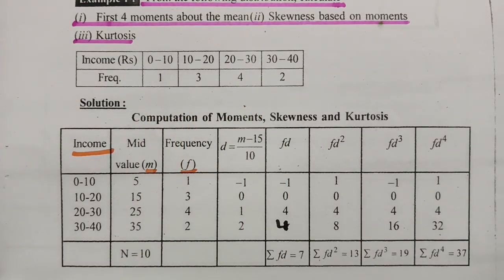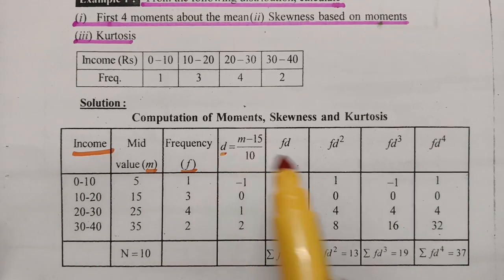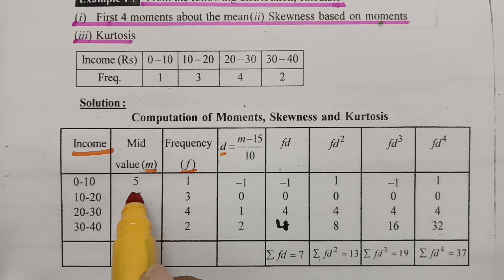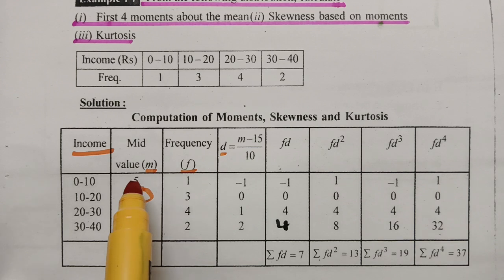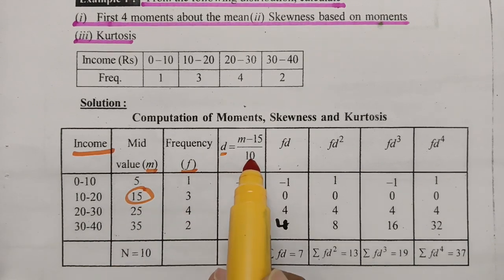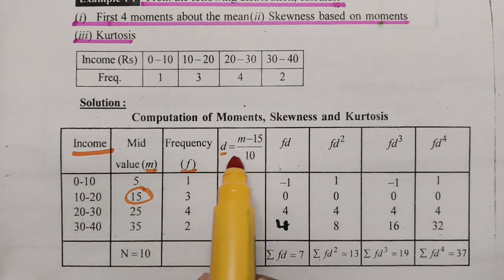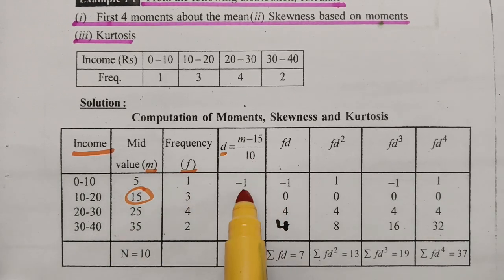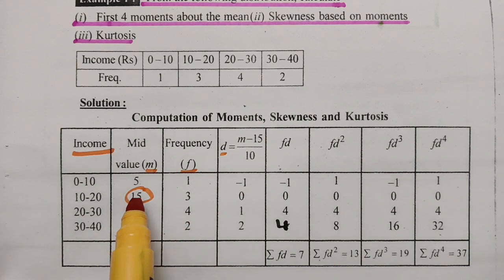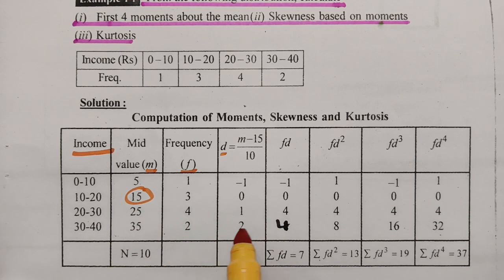Next we need d, where d = (m − 15) / 10. Here 15 is the assumed mean and 10 is the length of the class interval. So: (5−15)/10 = −1, (15−15)/10 = 0, (25−15)/10 = 1, and (35−15)/10 = 2.